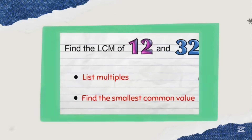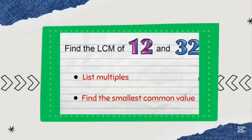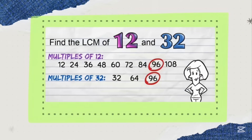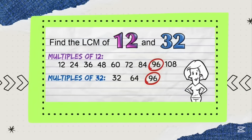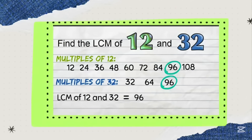If we have to find the LCM of 12 and 32, we can list some multiples and find the smallest common value. Multiples of 12: 12, 24, 36, 48, 60, 72, 84, 96, 108. Multiples of 32: 32, 64, 96. The LCM of 12 and 32 is 96.